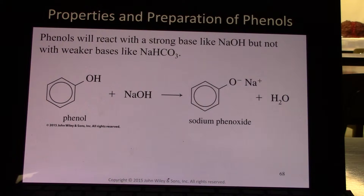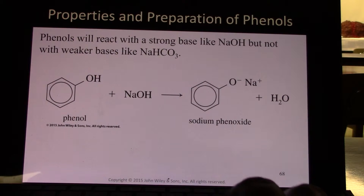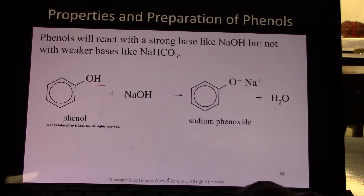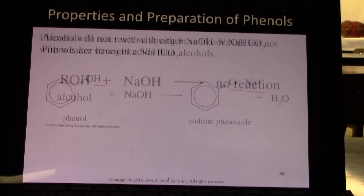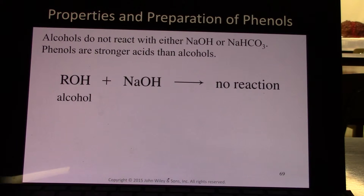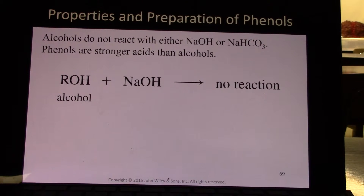Phenols will react with strong bases like sodium hydroxide, but they don't react with weaker bases like baking soda. Baking soda cannot remove this hydrogen, whereas sodium hydroxide can remove that proton and give the O-minus on the phenol group. Alcohols do not react with either sodium hydroxide or baking soda. Phenols are much stronger acids than alcohols — it takes a much stronger base than sodium hydroxide to deprotonate an alcohol.